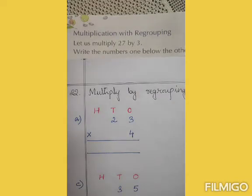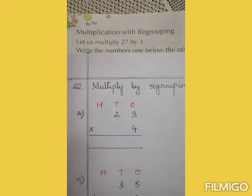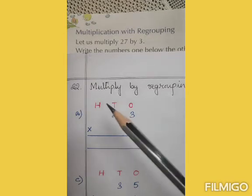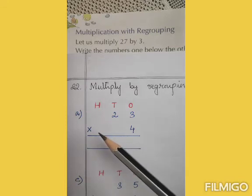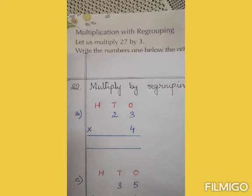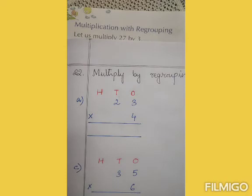Now we have multiplication with regrouping. This means you have to carry the digits while multiplying. Question number 22: multiply by regrouping. We have arranged the numbers with a ones place, tens place, and a hundreds column as well, because you may get the answer in the hundreds place after multiplying. Now let us start with question number A — look very carefully how multiplication by regrouping is done.